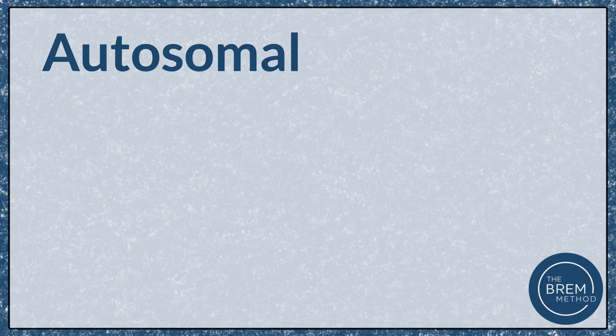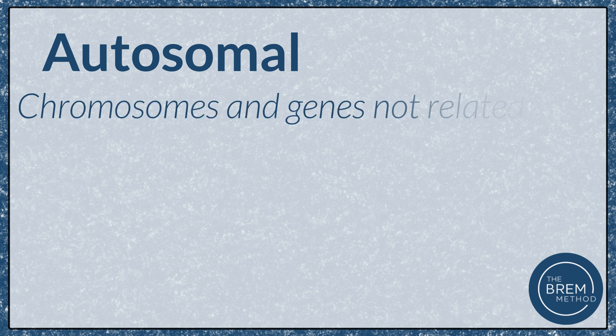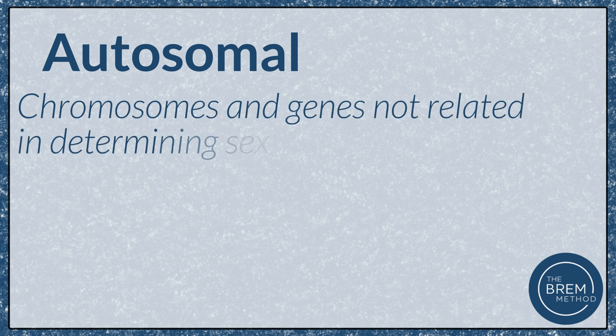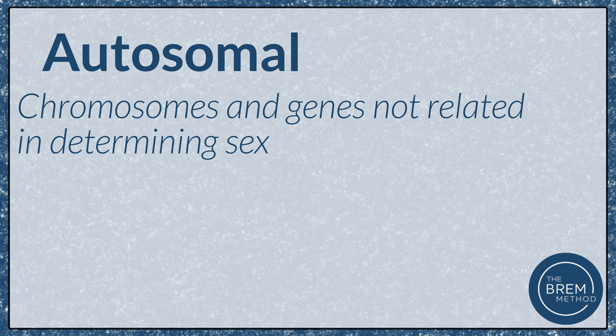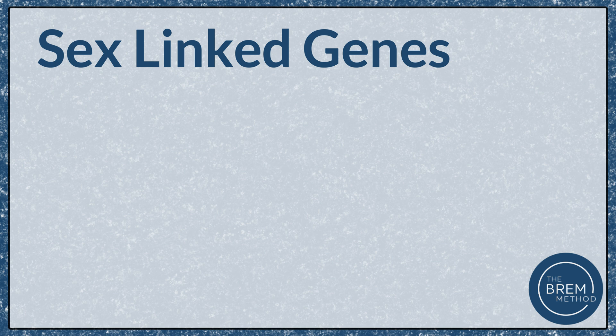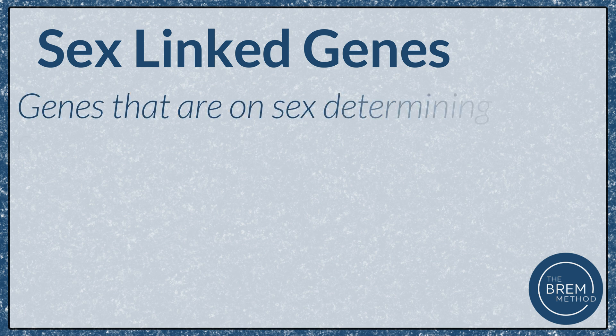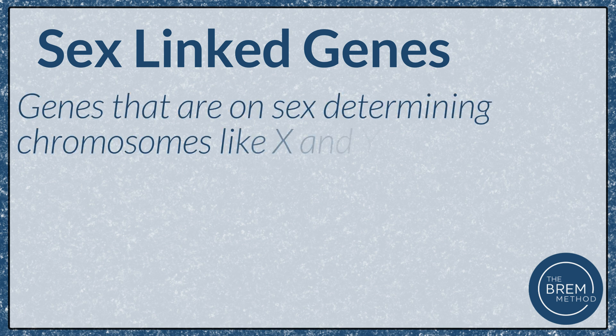First, let's go through a couple of definitions. Autosomal just means chromosomes and genes that are not related to determining sex. For mammals, that means everything except for the X and Y chromosomes. On the other hand, sex-linked genes refer to genes that are on the sex-determining chromosomes like X and Y. These will have different inheritance patterns, so it's important to recognize if you're working with autosomal genes or sex-linked genes.